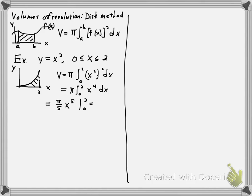If we plug in 0, we don't get anything. If we plug in 2, we get 32 fifths times pi. This is the volume of the solid region that we would obtain if we took this planar region and rotated it about the x-axis.